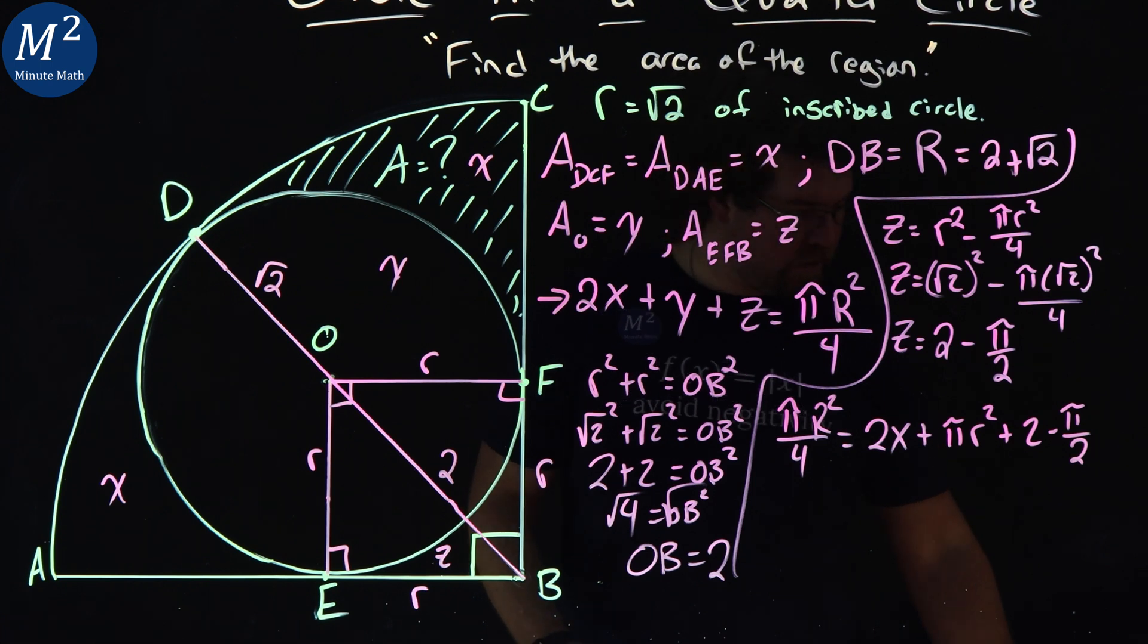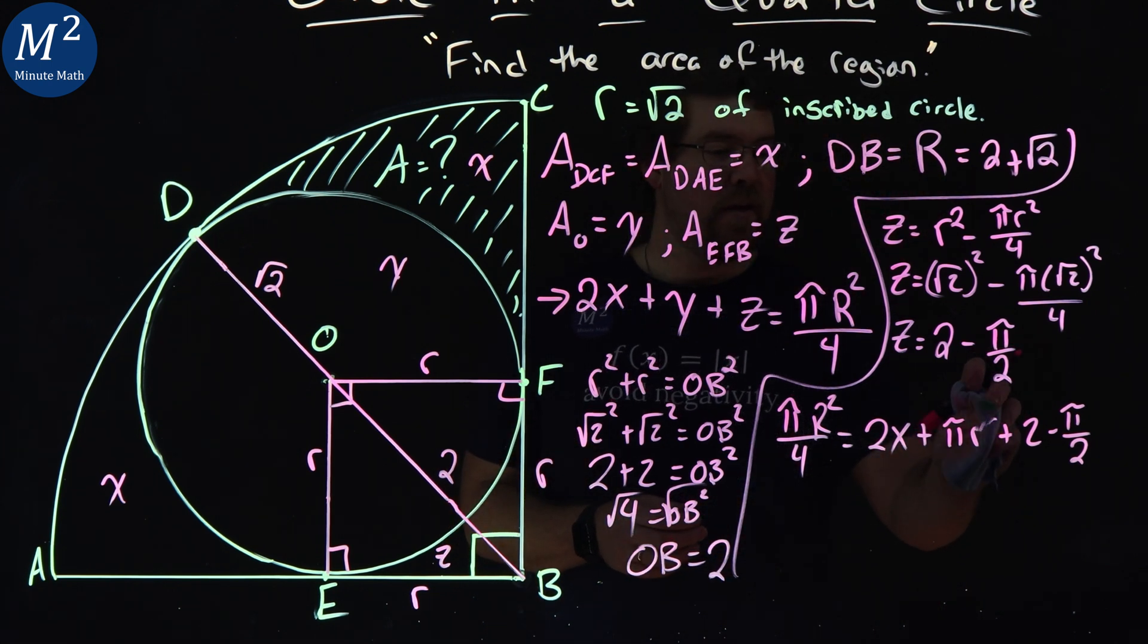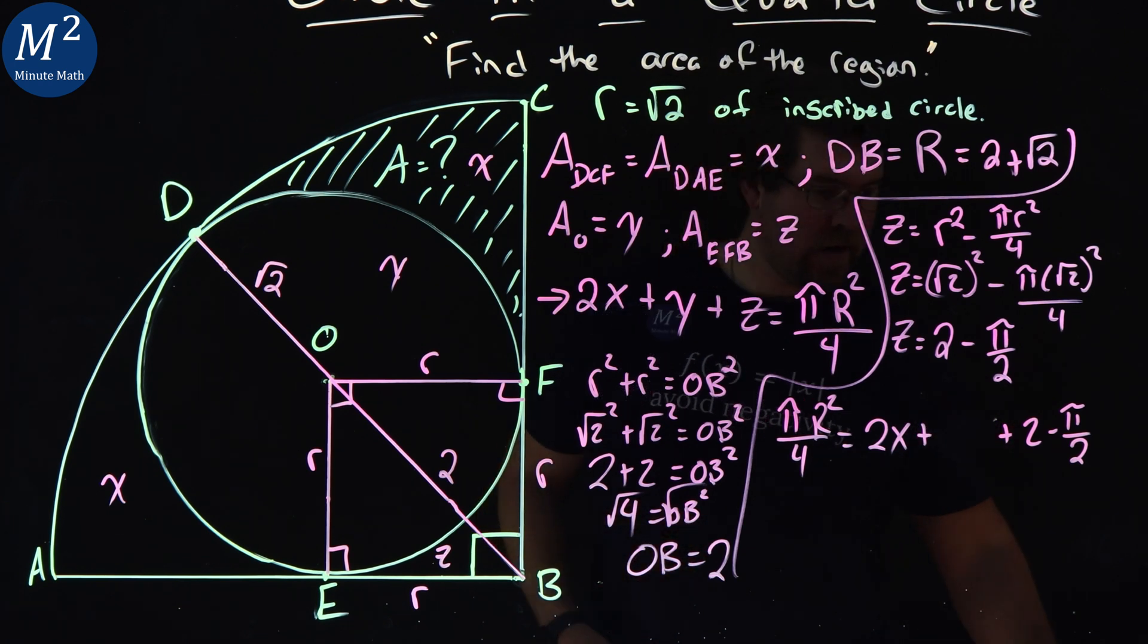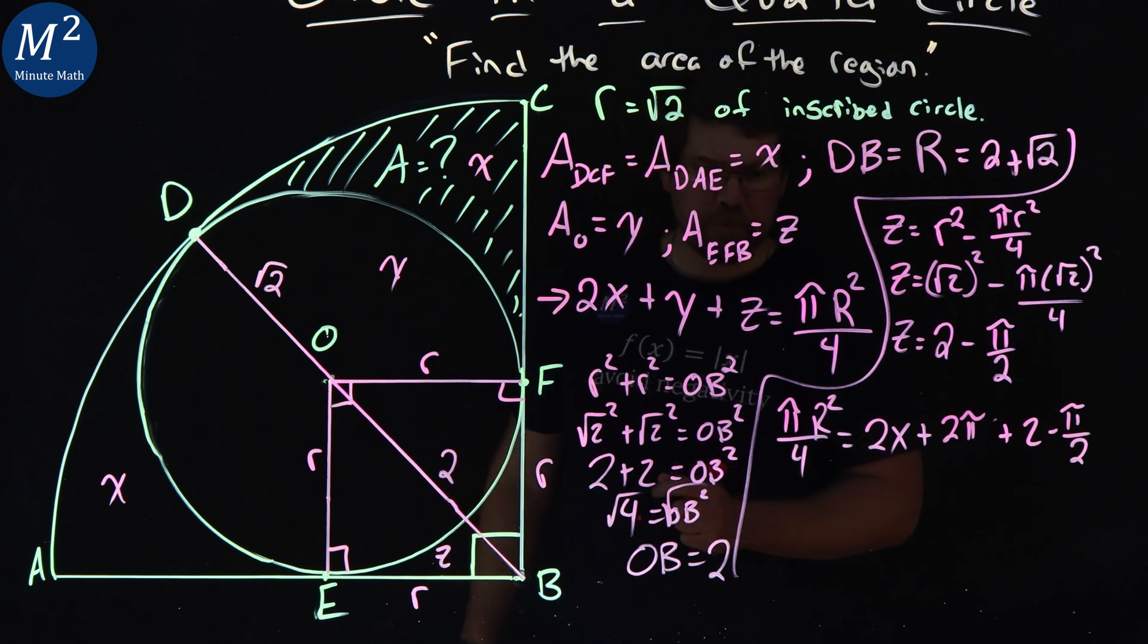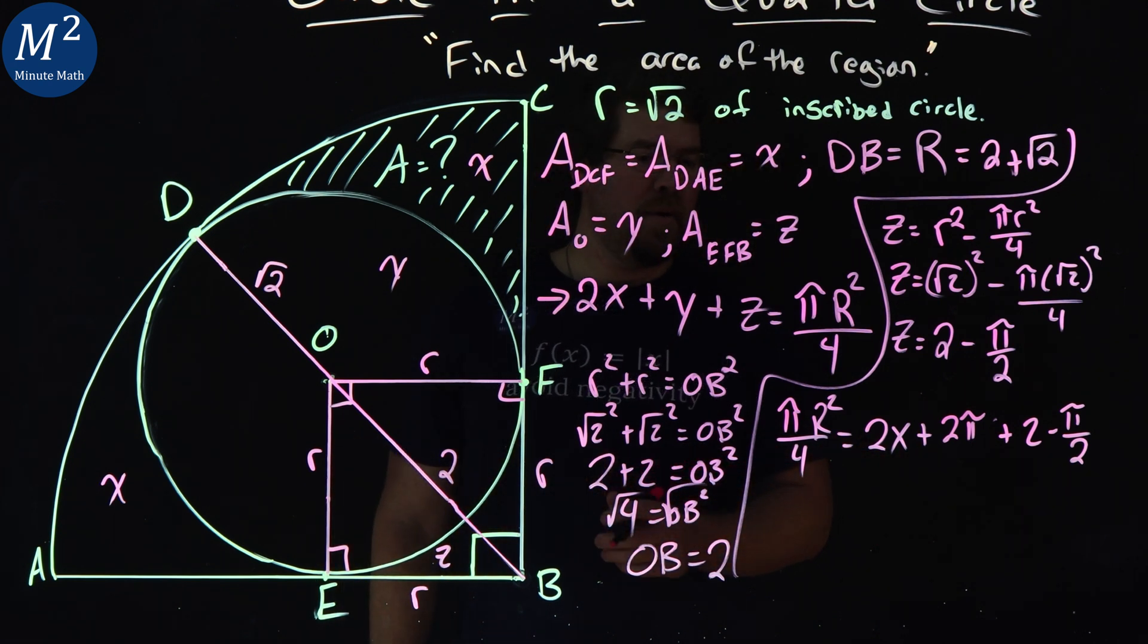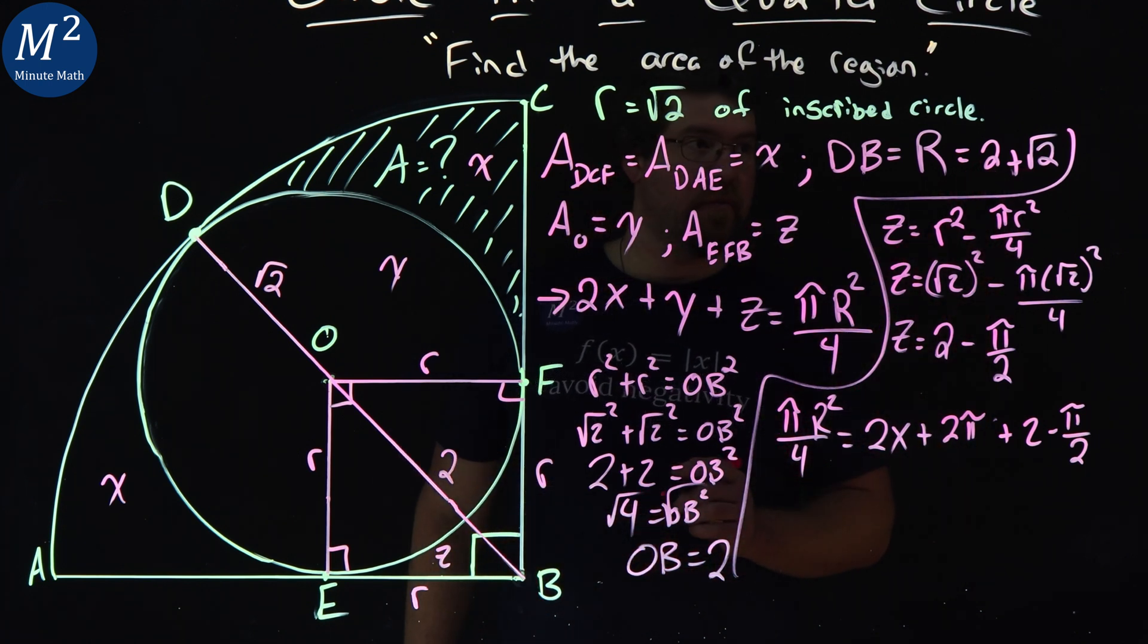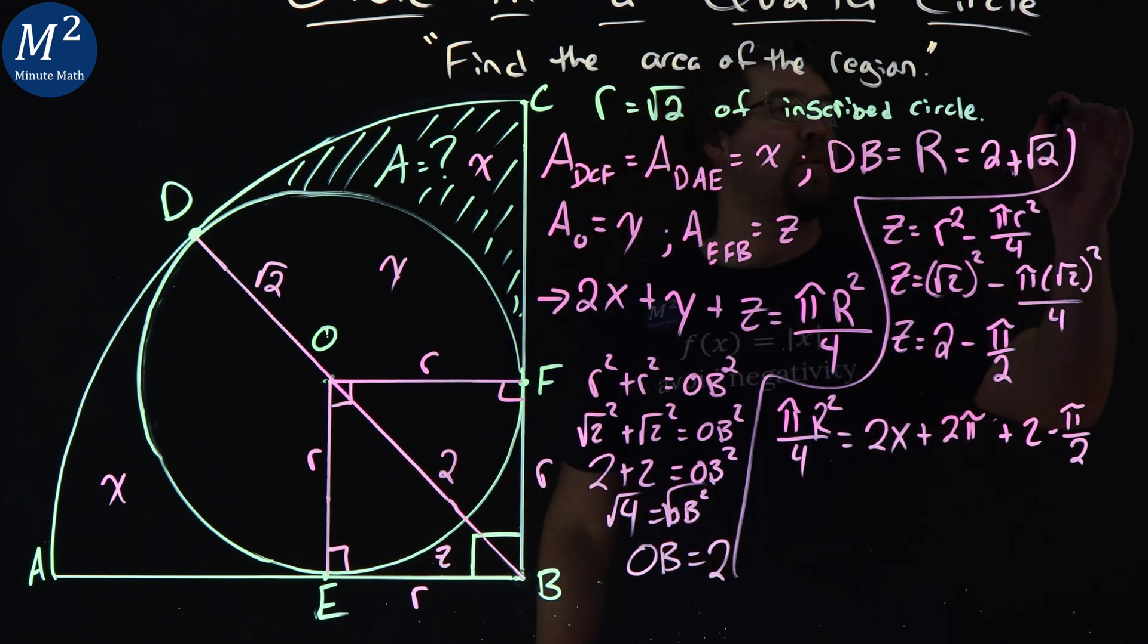Now, R squared, which we already know is square root of 2 squared, so it's going to be 2 here. So we have 2 pi right there. 2 pi is kind of saving space here. We have 2 pi. Well, now from here, we can try to simplify and try to get X by itself. All right, well, big R we know as well. 2 plus square root of 2.